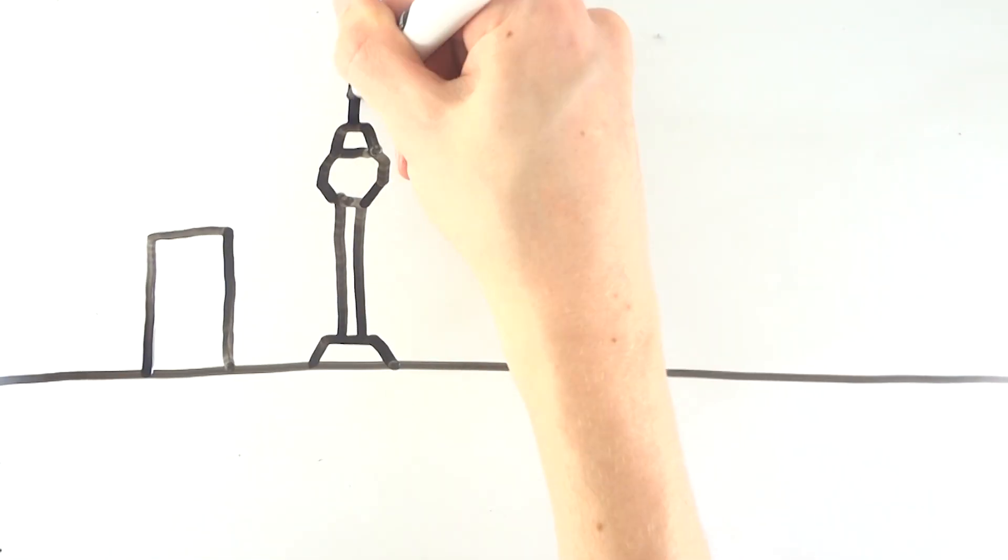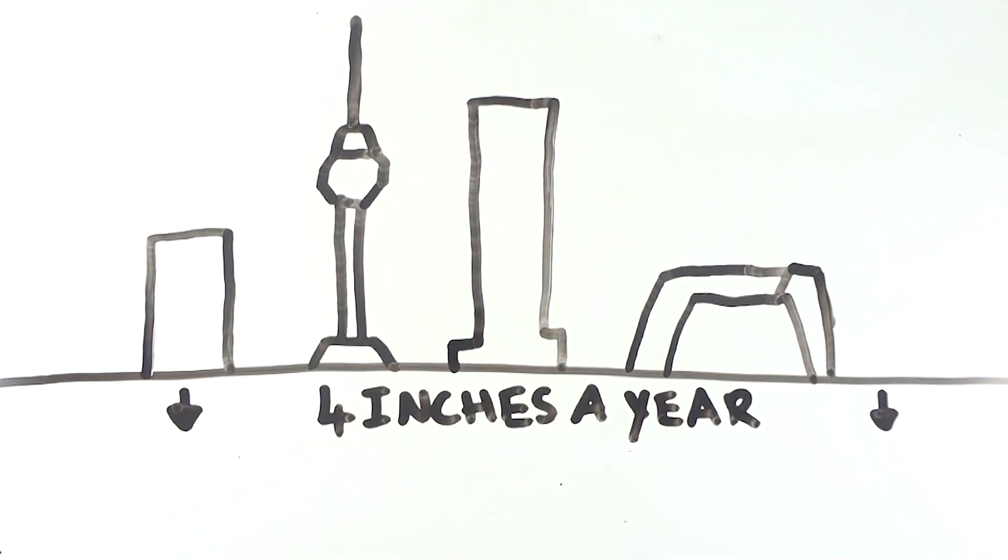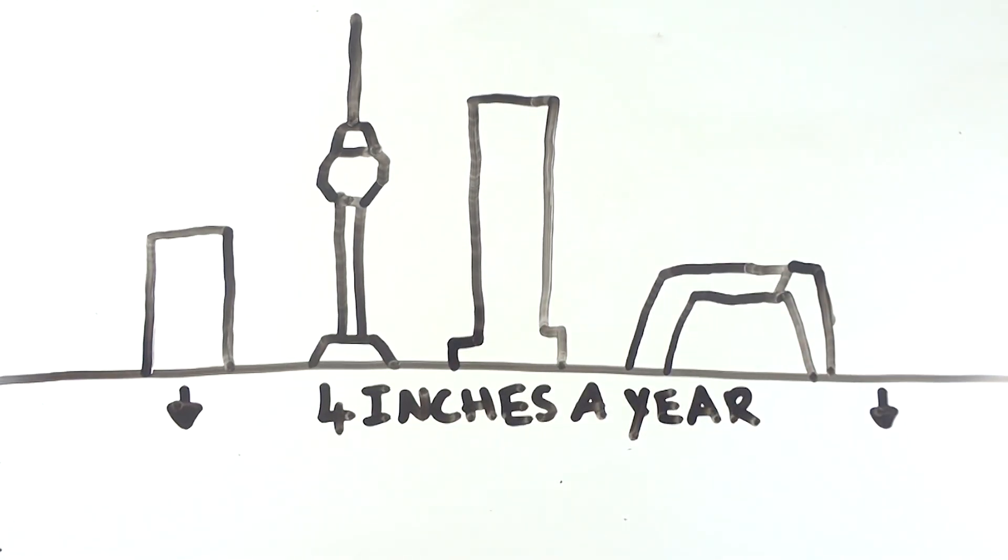One is a bit more out there though. Beijing is sinking, and it is sinking as much as 4 inches every year as found through satellite imagery and GPS data.